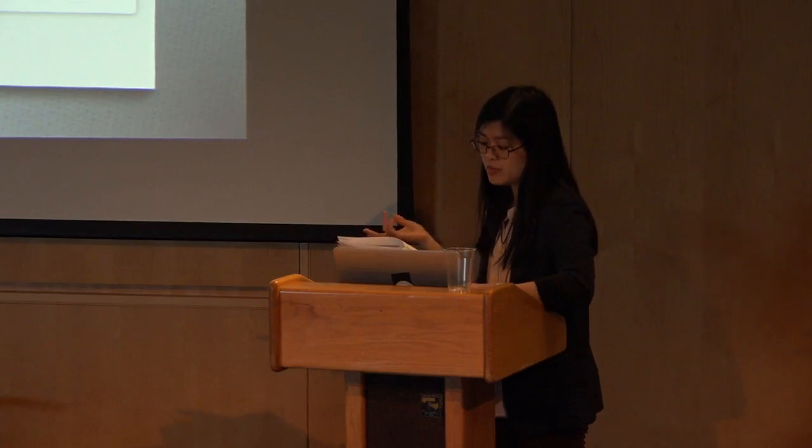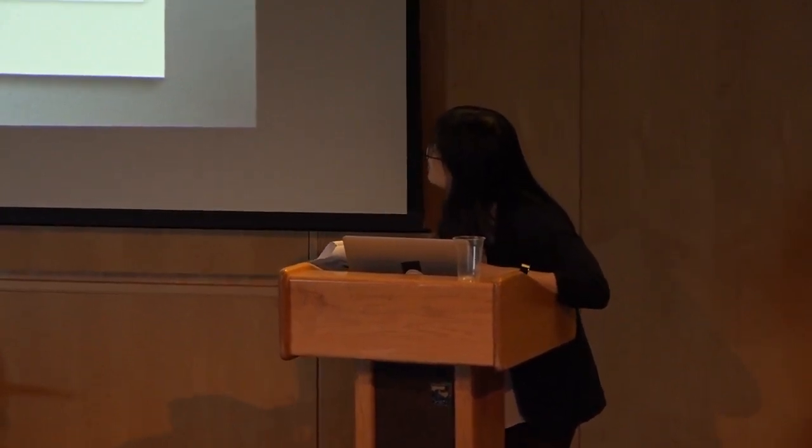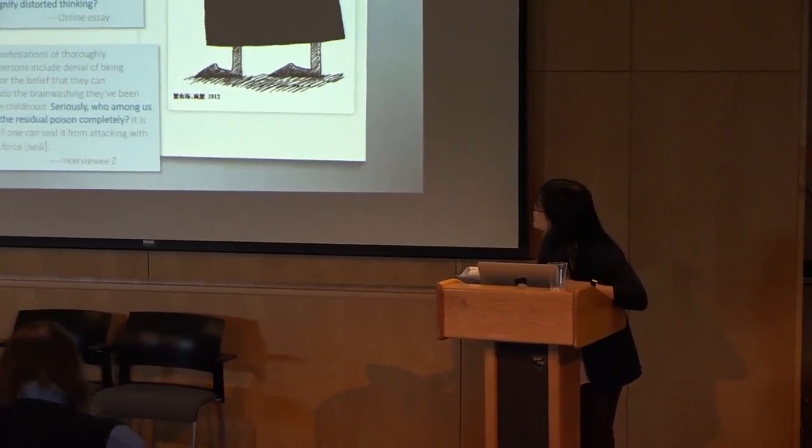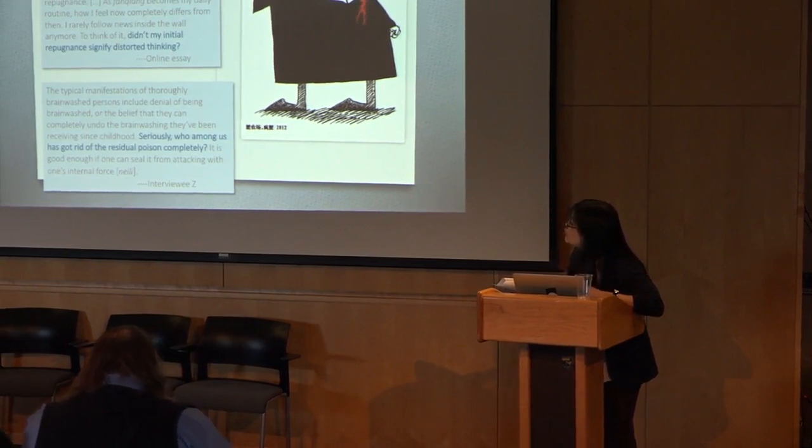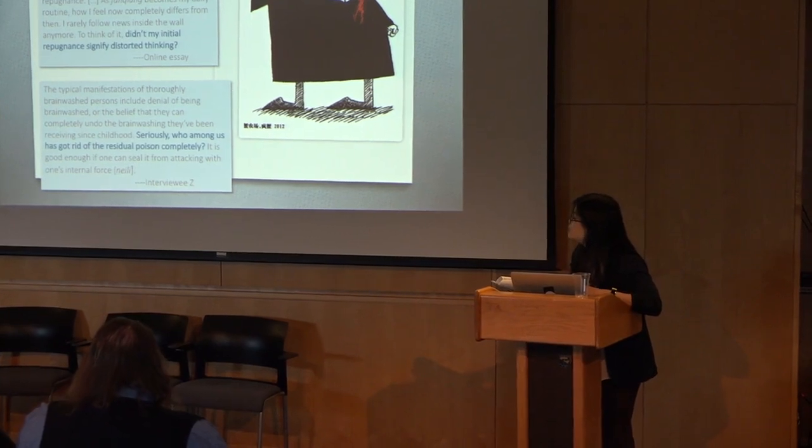Some believe that after a period of violently purging themselves, they took care of the brainwashing. All they do now is to reject mainstream messages. But theoretically, this signals a return to a contained self, a Chinese dissident version of perceived media bias in mainstream media. But more of my interviewees retain their brainwashing paranoia, a sense of epistemic anxiety. One interviewee says: the typical manifestations of thoroughly brainwashed persons include denial of being brainwashed and the belief that they can completely undo the brainwashing they've been receiving since childhood. Seriously, who among us can have got rid of the residue of poison completely? It is good enough if one has sealed it from attacking with one's internal force.